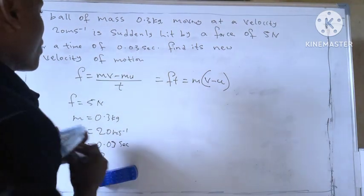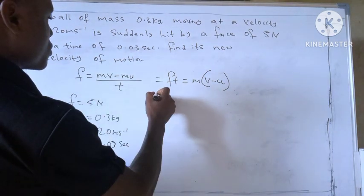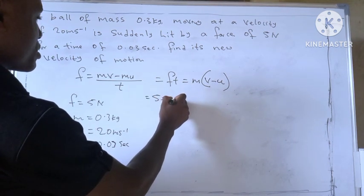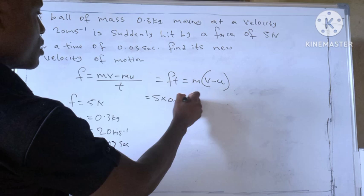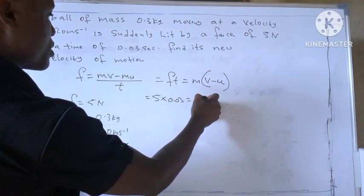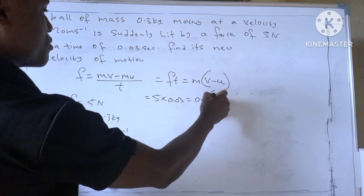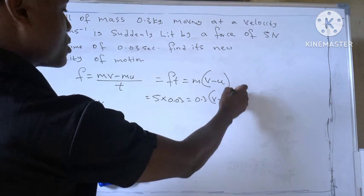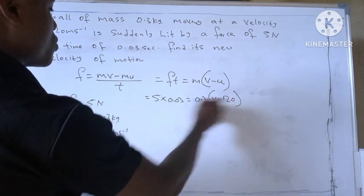So our force is 5, equal to 5 times the time 0.03, equal to our mass 0.3, bracket, V minus, while U is 20, close bracket.